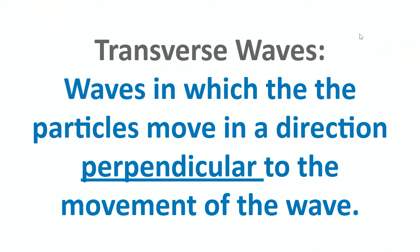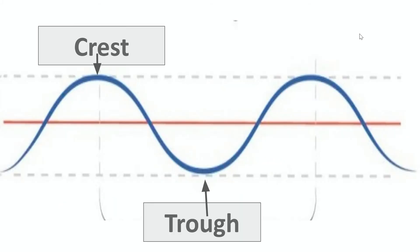Transverse waves are waves in which the particles move in a direction perpendicular to the movement of the wave. On the slide: the crest is the top part of the wave, the trough is the bottom, and the middle red line is the mid-line. We measure from the mid-line to the crest — or mid-line to trough — to get the amplitude. Measuring from crest to crest or trough to trough gives us the wavelength. The number of waves passing a point in a certain amount of time is our frequency.